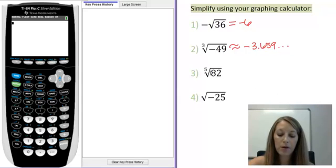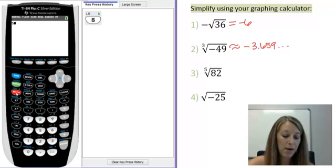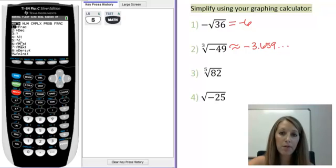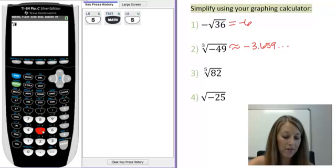Moving on to example number 3, the fifth root of 82. I have to use that other feature that I showed you before. Before I actually use that feature, I have to type in what root I'm specifically going for. In this case, the fifth root. Type in 5, and then I'm going to use math, and I'm going to use option number 5 here, the x root of something. Since I typed in that 5 first, that's going to tell the calculator I want to take the fifth root of it. I can scroll down to 5 and hit enter, or just hit 5, and notice it converts it to the fifth root.